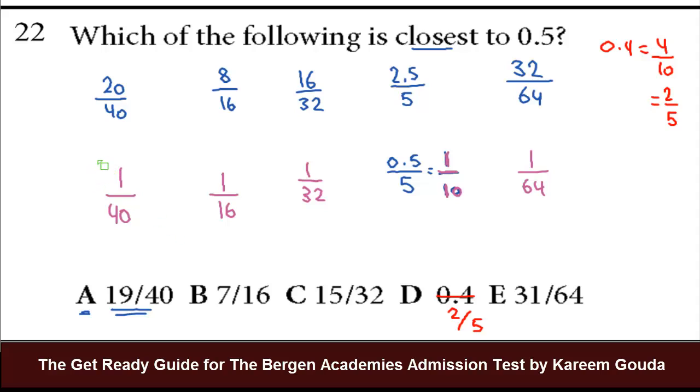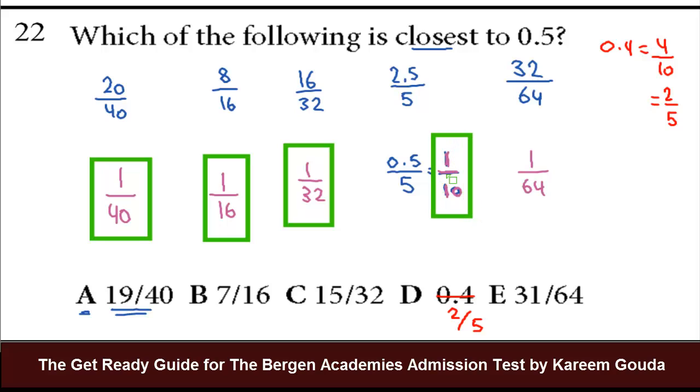So the difference between A and half is 1 over 40. The difference between B and half is 1 over 16. The difference between C and half is 1 over 32. The difference between D and half is 1 over 10. The difference between E and half is 1 over 64. Now the number that has the smallest difference will be the closest one to half. Which of these is the smallest? The smallest is the one with the biggest denominator. So 1 over 64 is the smallest difference, the smallest value. Therefore, E is the closest number to 0.5 or half.